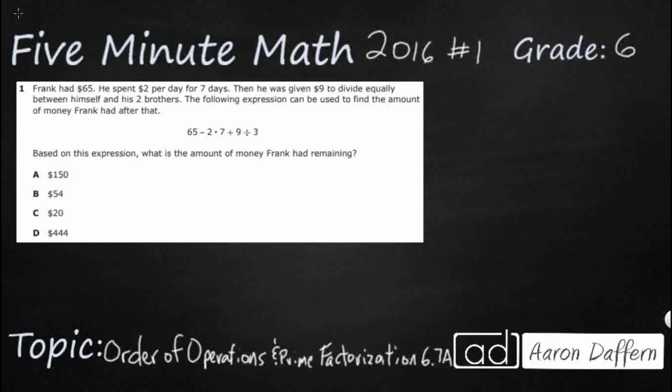So we have a fairly complicated story problem about Frank and giving money away and dividing money, but really they give us what we need right here. They give us our expression. Now this is an expression because it does not have an equal sign. So we need to simplify it. We need to reduce it using order of operations in order to figure out how much money he had left. It's 65 minus 2 times 7 plus 9 divided by 3.